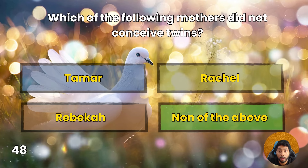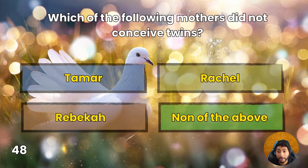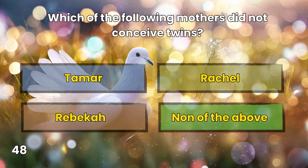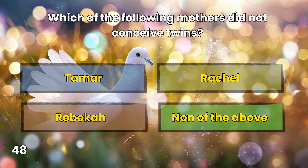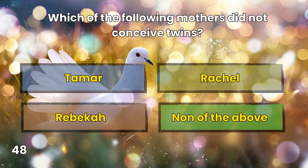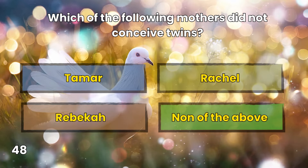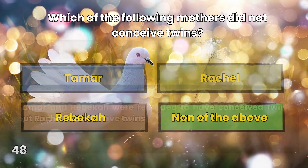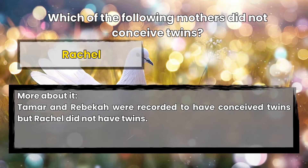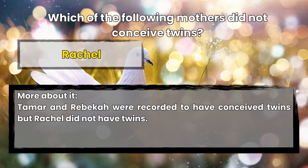Question 48: Which of the following mothers did not conceive twins? Tamar, Rachel, Rebecca, or none of the above? Rachel. Tamar and Rebekah were recorded to have conceived twins, but Rachel did not have twins.